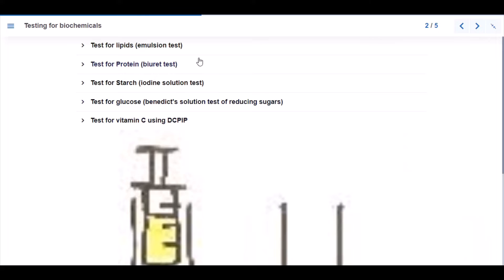Testing for biochemicals: there are different types of tests. I have about five listed here. Test for lipids, which is the emulsion test. Test for protein, which is the biuret test. Test for starch, iodine solution test. Test for glucose, Benedict's solution test for reducing sugars. And then we have the test for vitamin C using DCPIP.